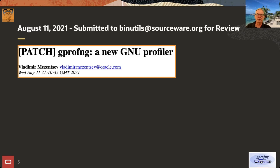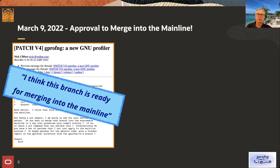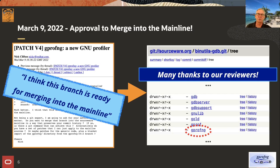To the outside world, it started August 11, 2021, when we submitted our request for preview to the binutils community. Vladimir sent it out and made the code available as a patch and asked for help with the review. Then on March 9, 2022, we got the long-awaited message that we were going to be part of the mainline. We are now part of binutils, and we'd like to thank the reviewers — also within Oracle — who helped us with that process.